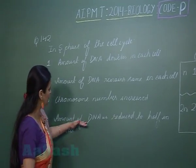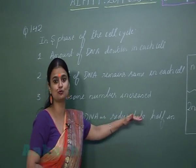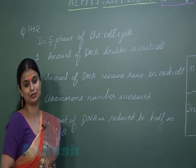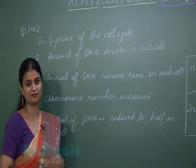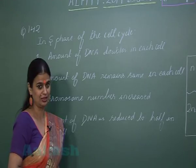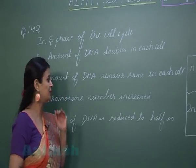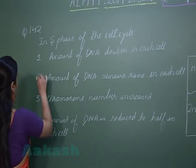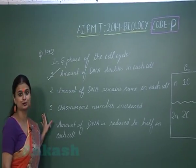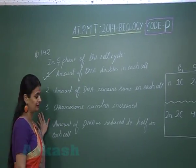Option: Amount of DNA is reduced to half — this is wrong. DNA content is reduced to half after division, which occurs in M phase. So the right option for question 142 is option number 1.